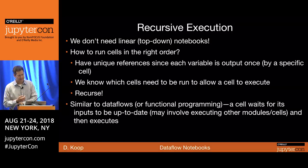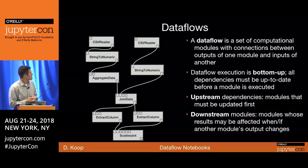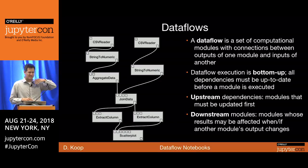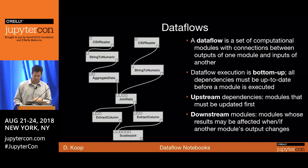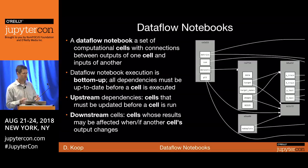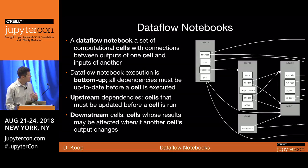We have unique references since each variable is output once by a particular cell, and we know which cells need to be rerun to allow a cell to execute. That 'once' piece is important — you're only allowed to set a value to a variable once. We can recurse up the chain, similar to dataflows and scientific workflows, and similar to functional programming. A cell waits for its inputs to be up to date, may involve executing things it depends on, and then executes. In a dataflow, you have computational modules with connections from outputs of one to inputs of another, with upstream and downstream dependencies.